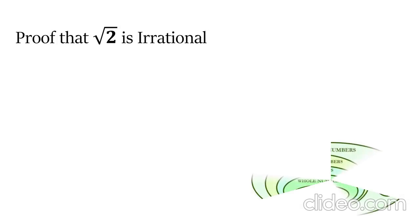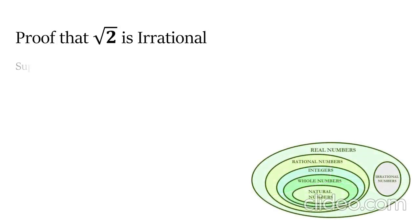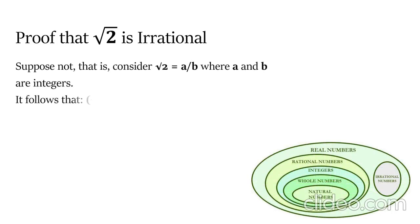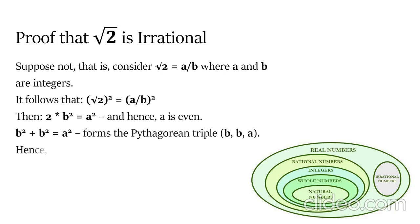The square root of 2 is indeed an irrational number. To do this, we will utilize the previous hypotheses. Suppose not, that is, consider the square root of 2 is rational and it can be represented as a ratio of integers a and b, with b non-zero. It follows that if we square both sides, we have 2 is equal to a squared over b squared.